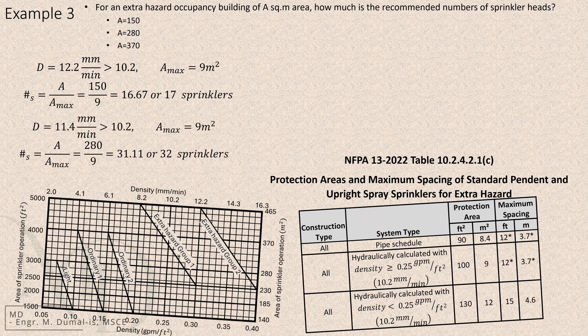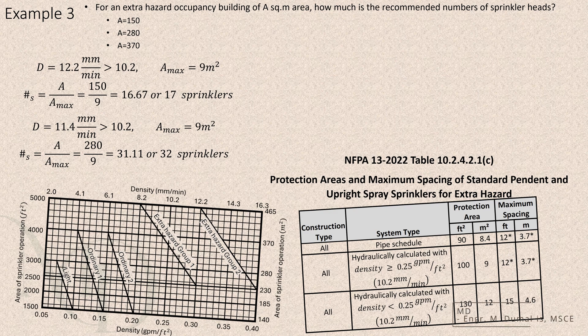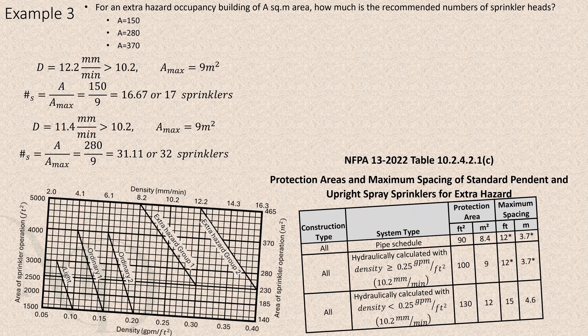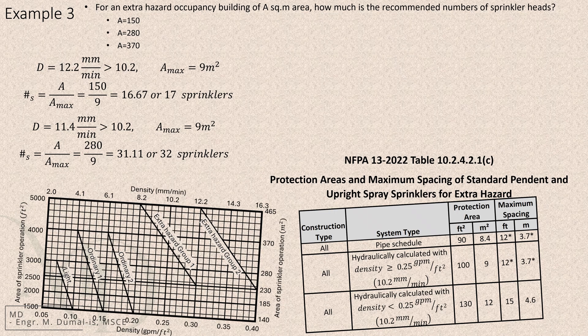For the second case, the total area is 280 square meters. Matching this on the area density curve gives a density of 9.8 millimeters per minute. That corresponds to a maximum area per sprinkler of 9 square meters from the same NFPA table. Dividing 280 by 9 gives 31.11, so we round up to 32 sprinklers.